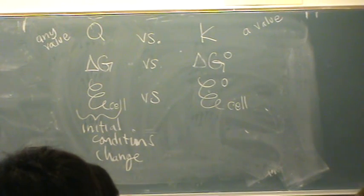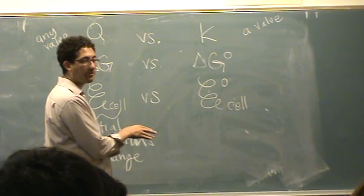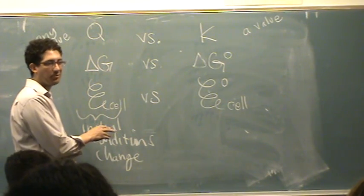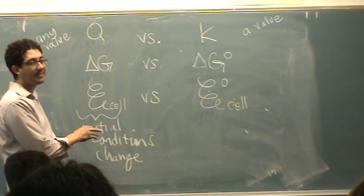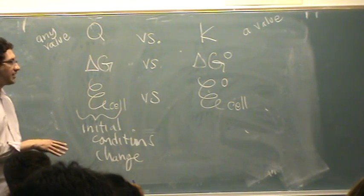When it doesn't say cell, does that mean it's for a half reaction? If it doesn't say cell, probably it's for a half reaction, but sometimes the cell is assumed. That's why I don't always write it. Oh, okay. But if it does say cell, then it's for the overall. Yes, for the overall if it says cell.